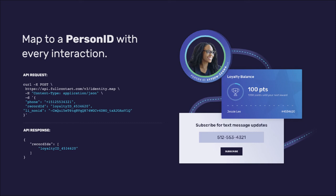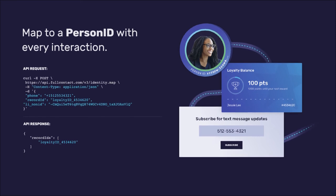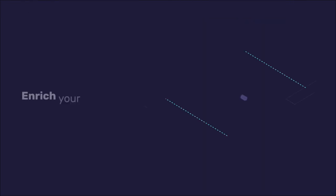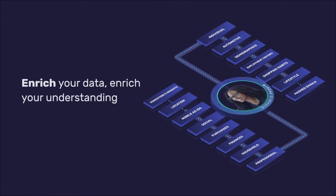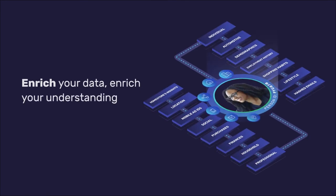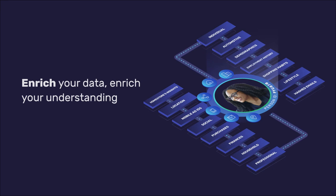Jessie signs up for text updates online. Full Contact links her to a new pre-authenticated anonymous ID. Full Contact maintains persistency offline and online and connects HomeStore to Jessie, so HomeStore can deliver her the most relevant messaging. This enables HomeStore to recognize Jessie in real-time, whether she's logged in or not.